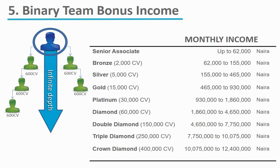At 30,000 CV on your pay leg, you become a platinum and your earning can be as much as 1.86 million Naira that month. At 60,000 CV, you become a diamond and can earn up to 4.65 million Naira. At 150,000 CV, you become a double diamond with earnings as high as 7.75 million Naira. At 250,000 CV, you become a triple diamond and can earn up to 10 million Naira. At 400,000 CV, you become a discount diamond and can earn up to 12 million Naira in that month.